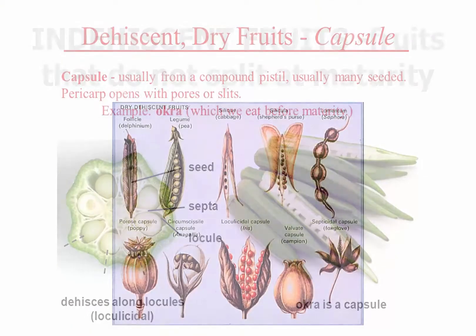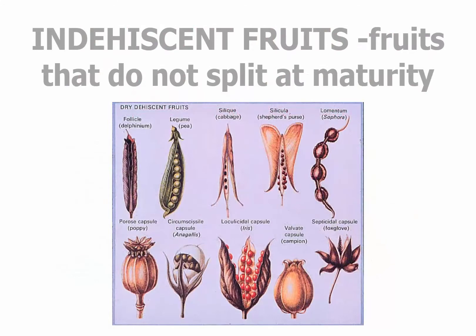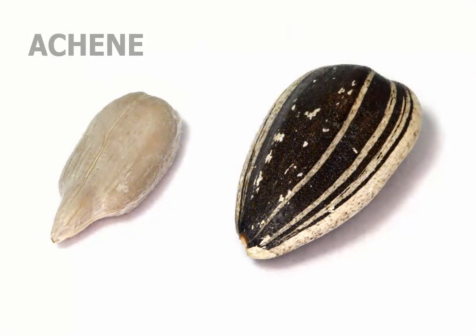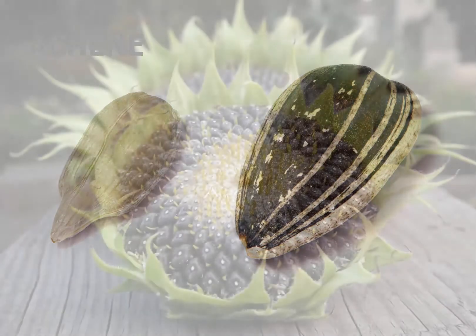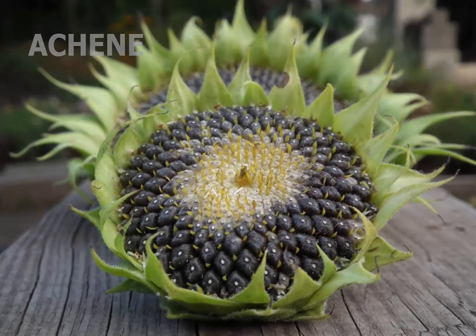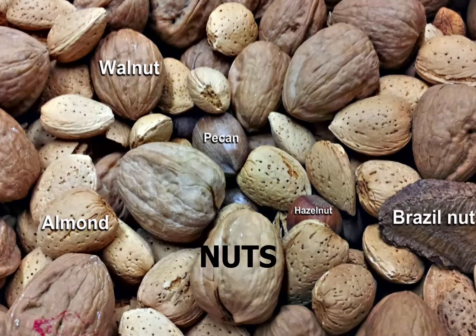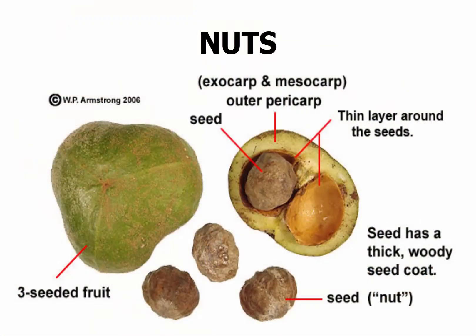In dry fruits that do not split at maturity — indehiscent fruits — the single seed is to varying degrees united with the pericarp. The base of the single seed of the achene is attached to its surrounding pericarp. The sunflower seed consists of the edible kernel plus the husk, which constitute the achene. Nuts are one-seeded fruits similar to achenes but they are generally larger and the pericarp is much harder and thicker.